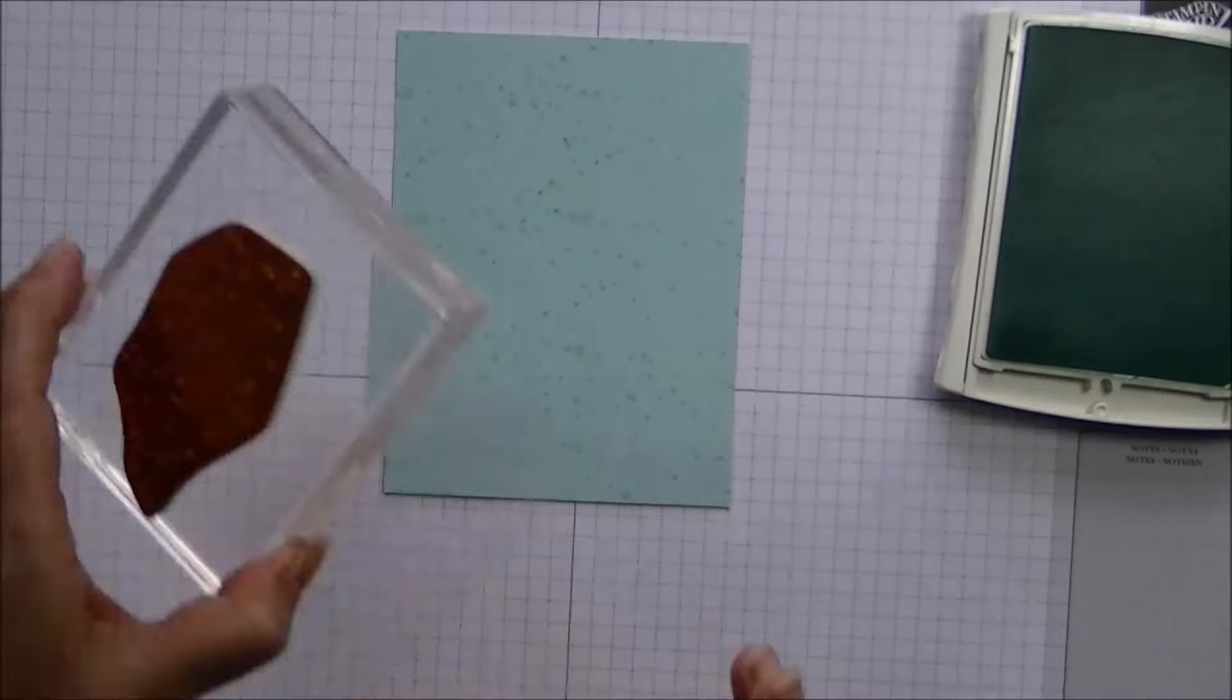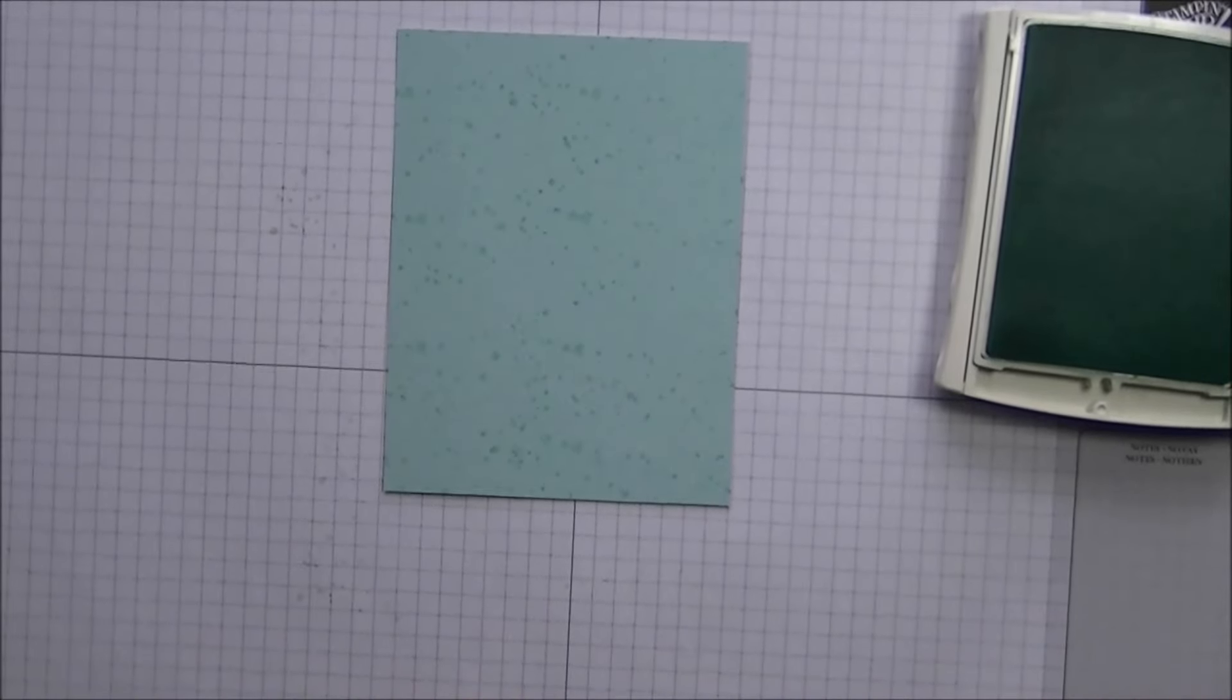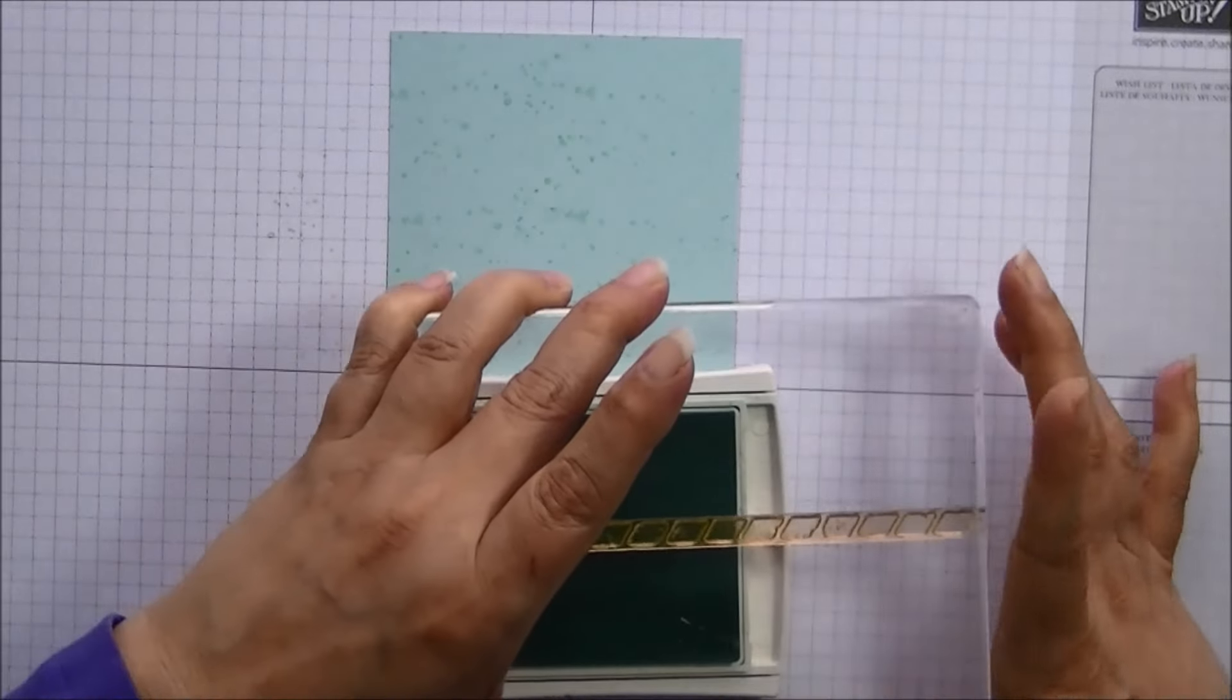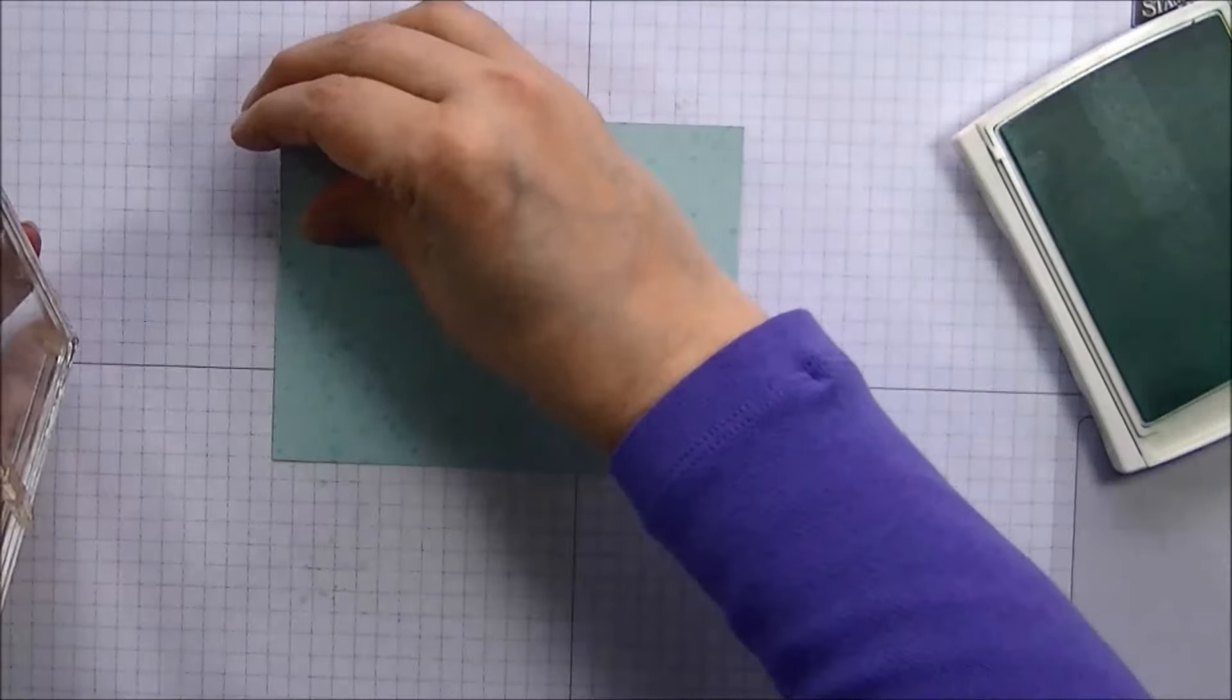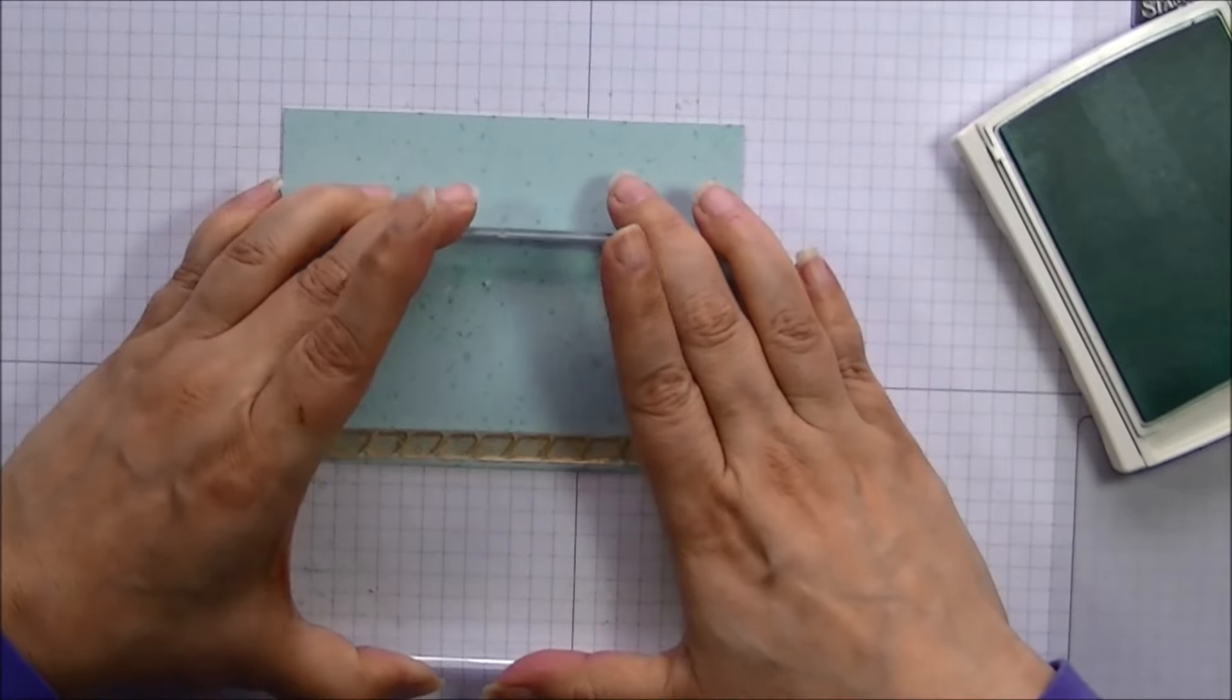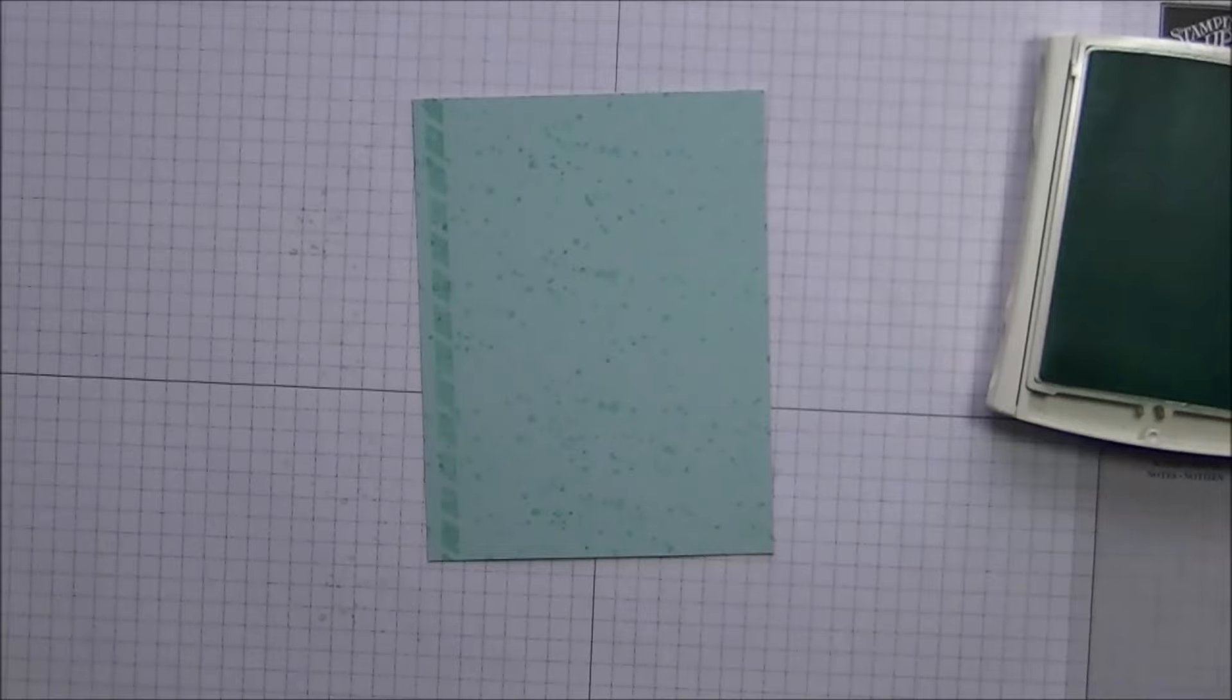The next stamp that I'm going to grab is the border here from the Butterfly Basics. And I have that mounted on my great big giant F block because that's where I found it fit best. So I'm going to ink it up. Then I'm going to turn it on the long side and right along the edge leaving just a little bit of a border. Here I am going to stamp that. And now I'm going to silence my phone.